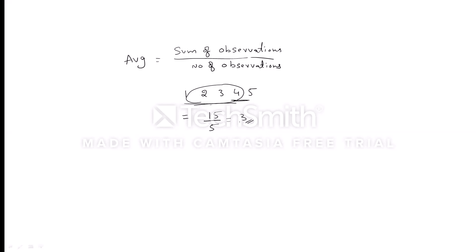In exams, to save time for smaller numbers we can use sum divided by total observations. But in exams they will not directly ask you to find average of given values — there will be tricky questions involved, so we have to think in different ways to calculate average.